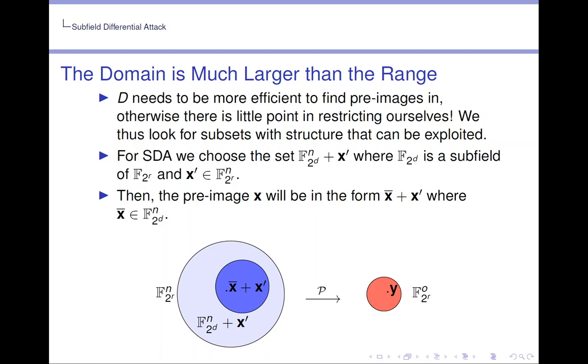For SDA we choose the set F_{2^d}^n plus x', where F_{2^d} is the subfield of F_{2^r} and x' is an element of F_{2^r}^n. Then the preimage x will be in the form of x̄ plus x', where x̄ is an element of F_{2^d}^n.